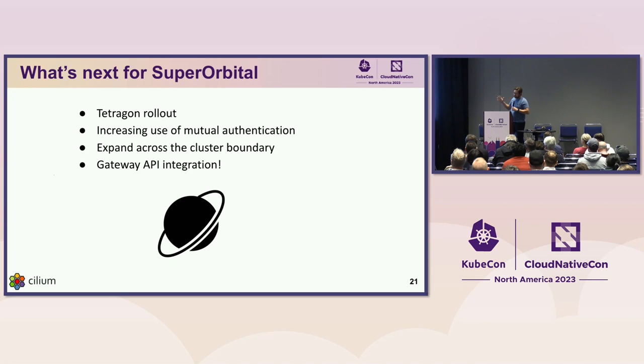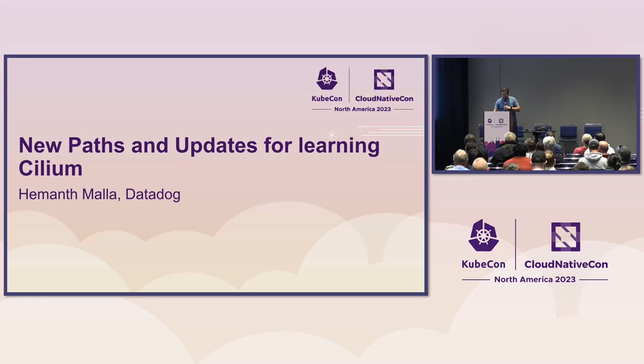What's next for us is very much in line with what Liz was talking about: Gateway API integration, Cilium service mesh with mutual authentication, and using Tetragon to make runtime security even more of a reality. Please feel free to come talk to me afterwards about your end-user use cases with Cilium — we're really excited to be part of this community. Now Hamanth will come up and talk about learning with Cilium.